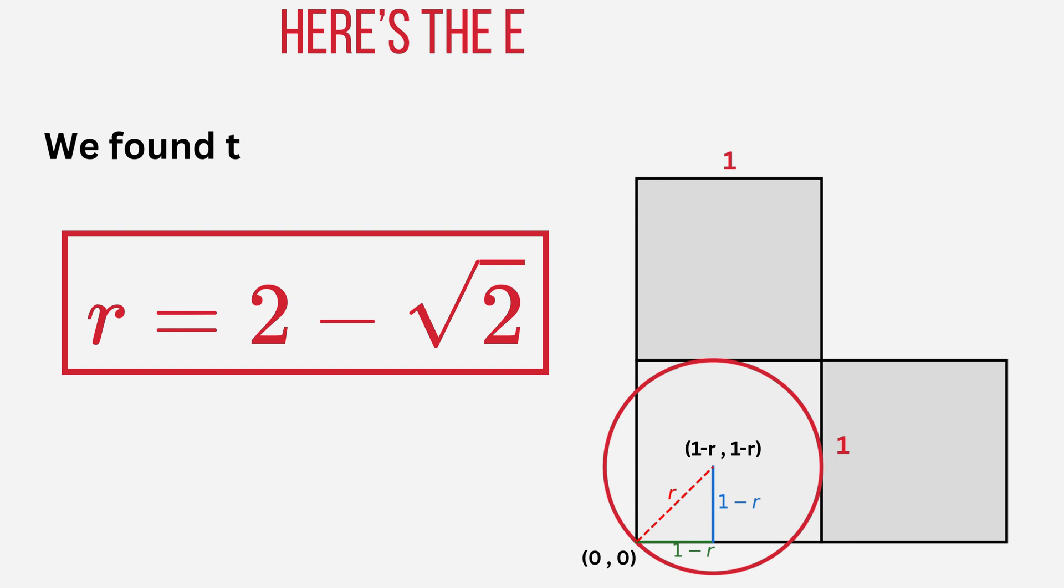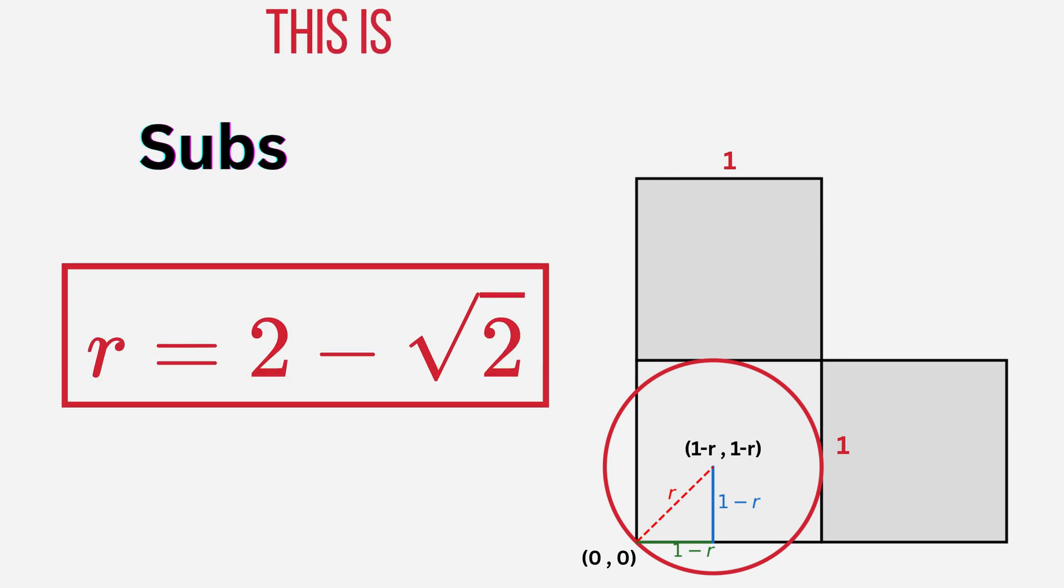So what do we get in the end? The exact radius of the circle is 2 minus root 2. That's approximately 0.586. This tiny value may seem unexpected, but it fits perfectly within the corner of the three squares. No guessing. Just clean, beautiful math. That's how we cracked the puzzle.